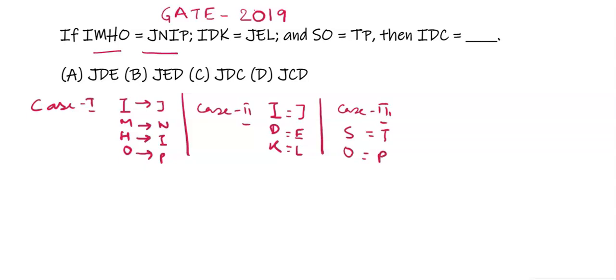So the solution to this question is IDC. The next alphabet of I is J, the next alphabet of D is E, and the next alphabet of C is D. So the answer is